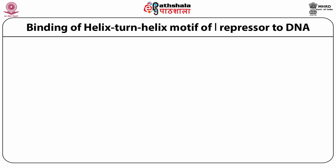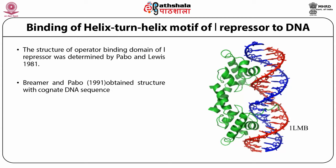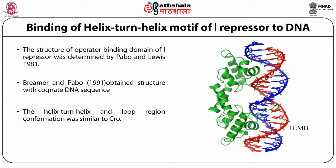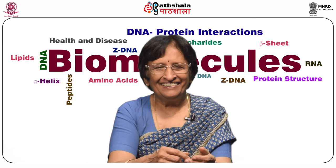Binding of the helix-turn-helix motif of lambda repressor to DNA: the structure of the operator-binding domain of lambda repressor was determined by Pabo and Lewis in 1981. Bremer and Pabo in 1991 obtained a structure with cognate DNA sequence. The PDB ID of this structure is 1LMB. The helix-turn-helix and loop region conformation was very similar to Cro-protein. The two recognition helices could fit in two adjacent major grooves of DNA as proposed earlier by Pabo and Lewis and Ollendorf's model.